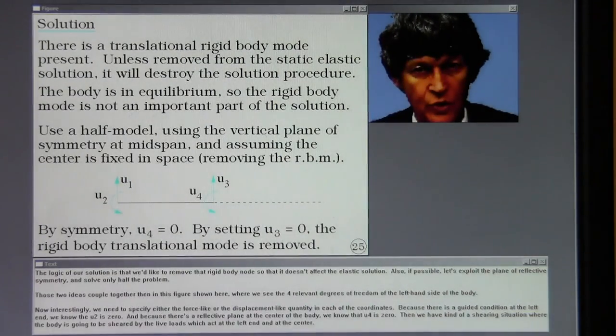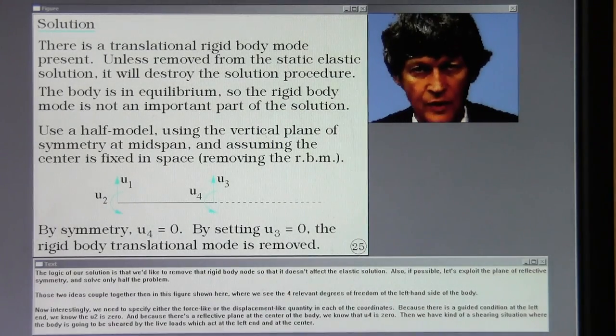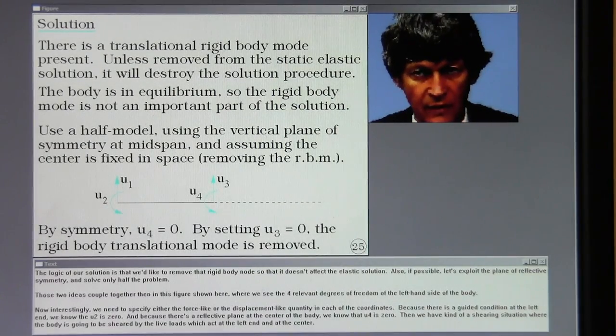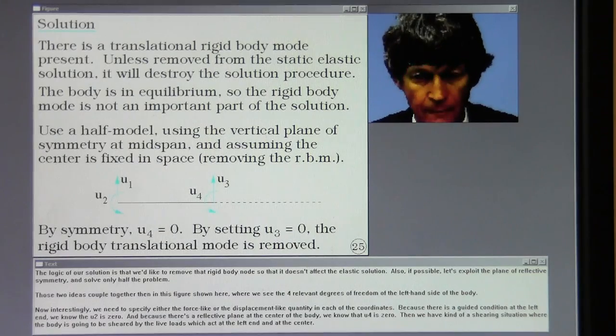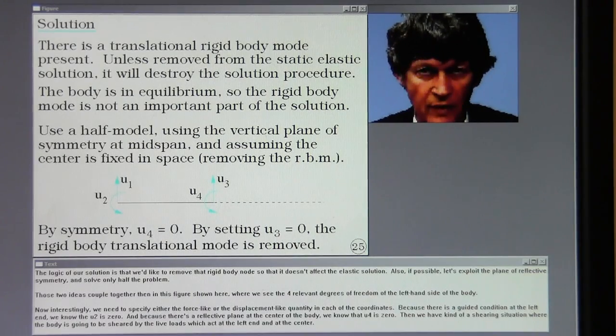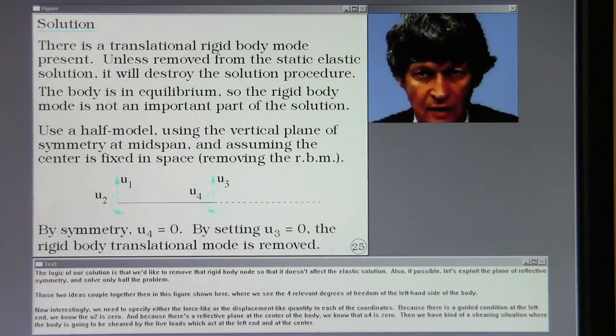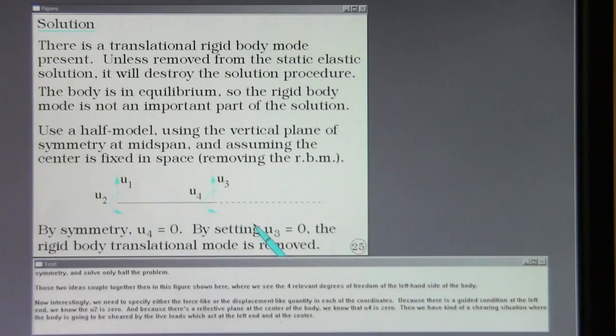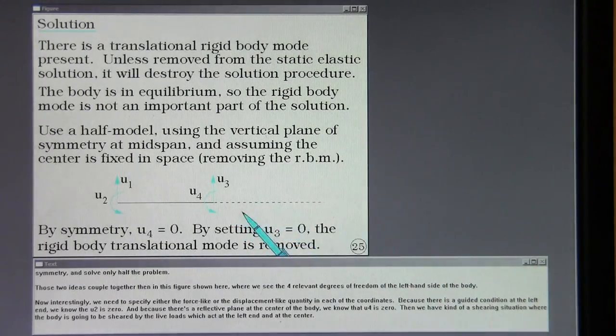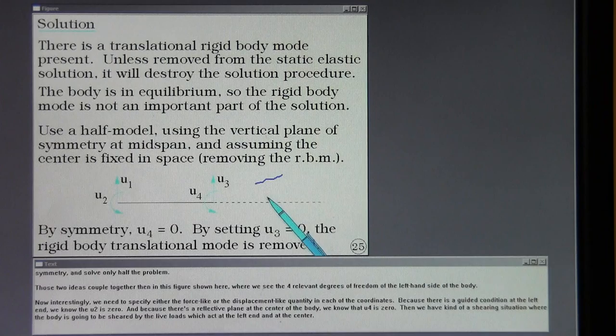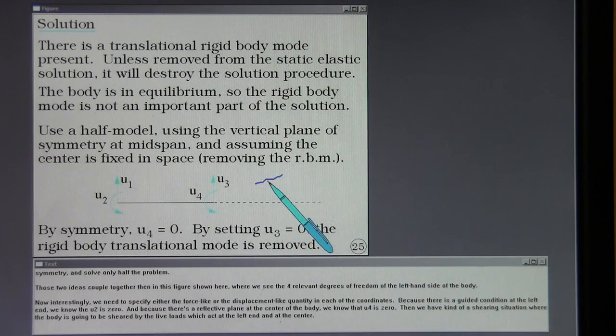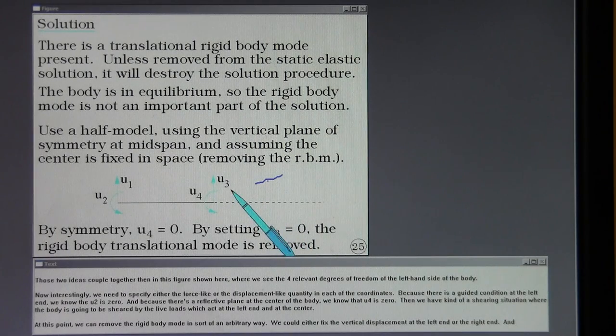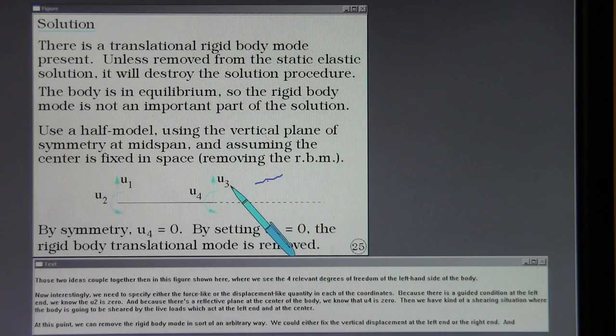The logic of our solution is that we'd like to remove that rigid body mode so that it doesn't affect the elastic solution. Also, if possible, let's exploit the plane of reflective symmetry and solve only half the problem. Those two ideas coupled together then in this figure shown here where we see the four relevant degrees of freedom of the left-hand side of the body. Now, interestingly, we need to specify either the force-like or the displacement-like quantity in each of the coordinates.